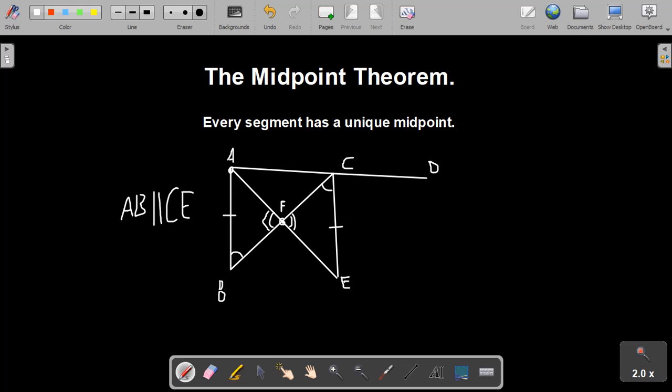And as corresponding parts of congruent triangles are congruent, that gives us that these segments here that we're looking for, BF and FC are congruent. So by definition, F is the midpoint of B and C. So what that's done so far is given us a midpoint. So we can guarantee a midpoint, but we still need to prove that there's only one, and it's a unique midpoint.